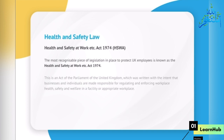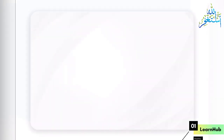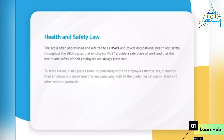Health and Safety at Work Etc. Act 1974, often abbreviated as HSWA, is an act of the Parliament of the United Kingdom written with the intent that businesses and individuals are made responsible for regulating and enforcing workplace health, safety and welfare. It covers occupational health and safety throughout the UK. It states that employers must provide a safe place of work and that the health and safety of their employees are always protected. To some extent, it also places responsibility with employees themselves to monitor their employer and ensure compliance with all guidelines set out in HSWA and other relevant protocols.